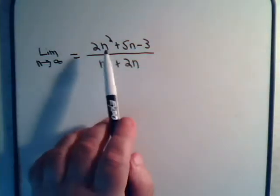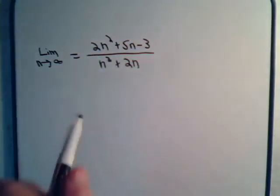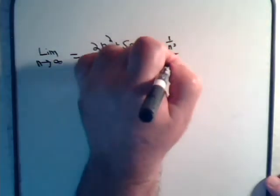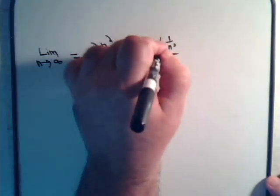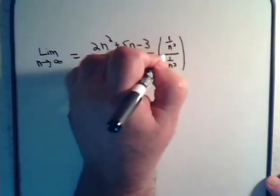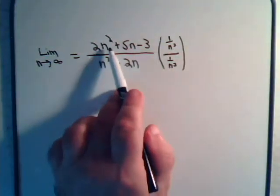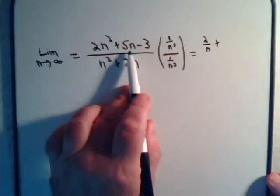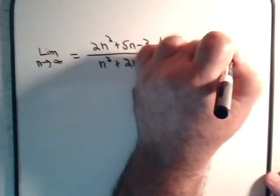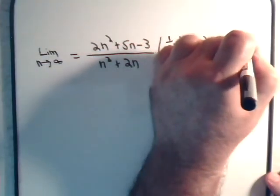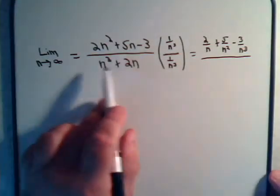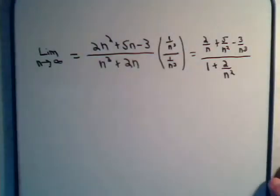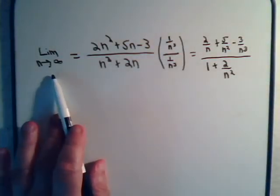So, we'll try out what we did before. Here the highest power of n is n squared, here it's n cubed, so we're going to multiply top and bottom by 1 over n cubed. And again, that's just multiplying by 1. Divided by 1 over n cubed divided by 1 over n cubed is just 1. Okay, so here we're going to have 2 over n, plus we're going to have 5 divided by n squared, minus 3 divided by n cubed. And down here we're going to get n cubed divided by n cubed is 1, plus 2 divided by n squared.